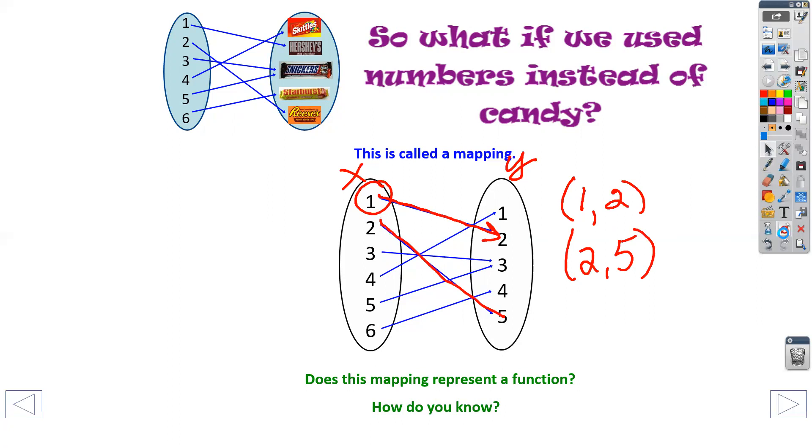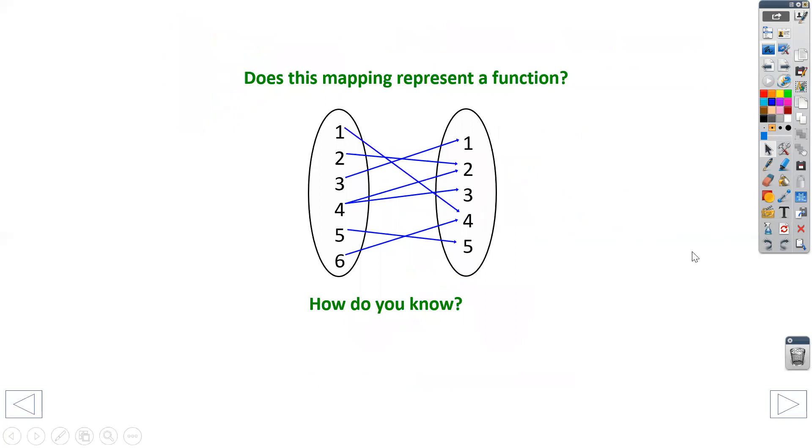So I can actually graph these as well. So right here, does this mapping represent a function? What I like to do is focus on my X side and take a look. Do any of those numbers have more than one line coming out of them? And the answer is yes. If I look at number four, notice it has two lines popping out of it. So is this a function? No.